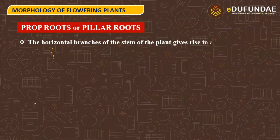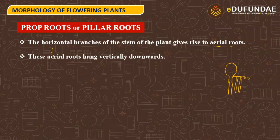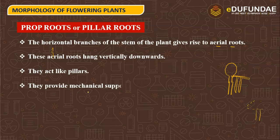The horizontal branches of the stem give rise to aerial roots known as prop roots and pillar roots. These aerial roots hang vertically downwards. They act like pillars and provide mechanical support to the plant.